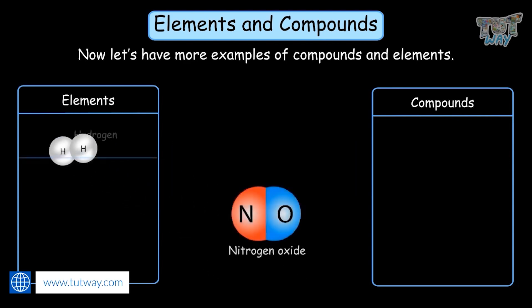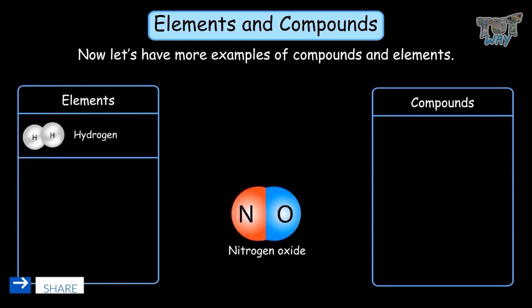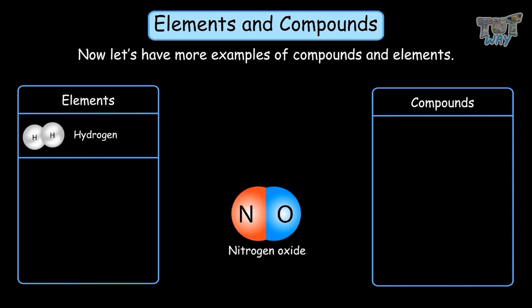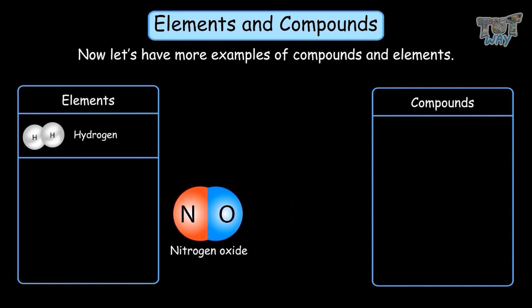Nitrogen oxide is a compound because each molecule of nitrogen oxide has the formula NO — that is, one atom of nitrogen and one atom of oxygen in every molecule of nitrogen oxide.